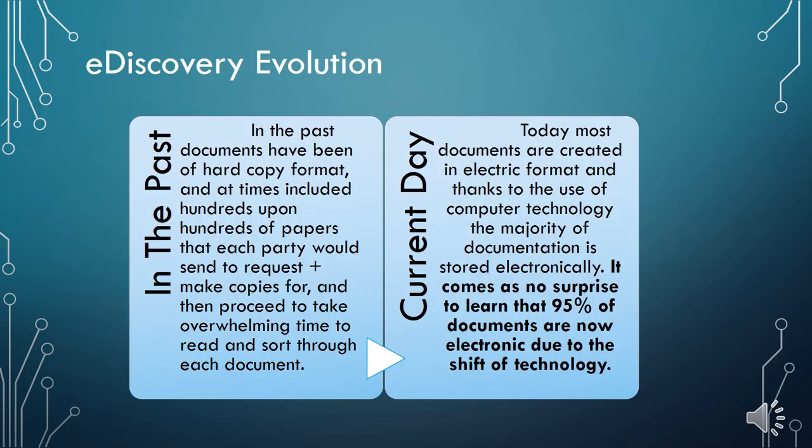So exactly how did we get here? Let's consider the scenario before the evolution of computers and electronics in any type of office setting. As you can imagine, there was a frenzy of hard copy documents scattered everywhere. Now let's consider a general discovery process with hard copy documents. Each party would make the request for documents, which means sending out your request, receiving the hard copies, and sorting through these documents by hand and then organizing them accordingly.